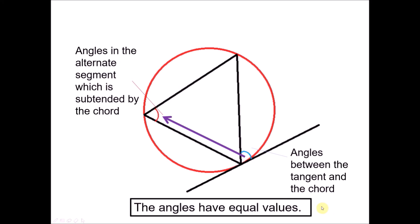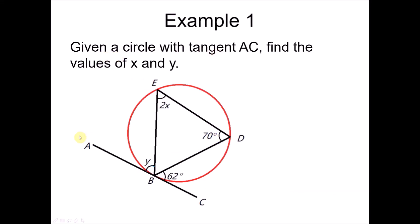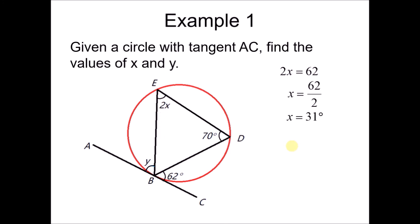Example 1 for the alternate segment theorem: given a circle with tangent AC, find the values of X and Y. Notice there are two angles formed between the chord and the tangent. For X, we know the angle between the tangent and chord equals the angle in the alternate segment subtended by the same chord. So 2X equals 62, meaning X equals 31 degrees. For Y, using the same property, Y equals 75 degrees.